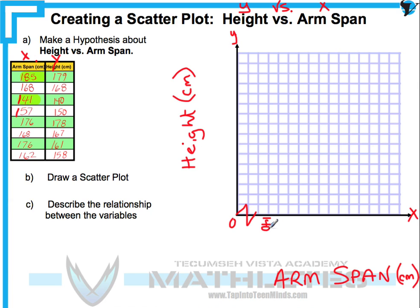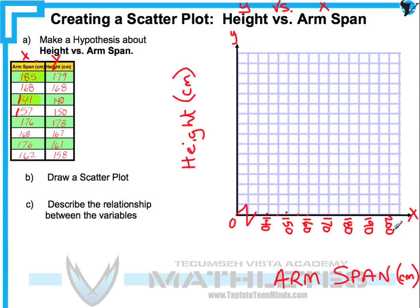Since we have to make it up to about 185, going up by fives — I'm just going to label every other mark — so you'll notice 140, 145, 150, 155, 160, 165, 170, and we'll go all the way to 200 to allow us to make some predictions. Whatever you choose as your scale, you must stay consistent.